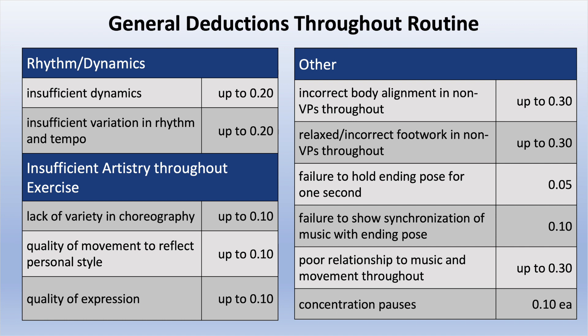General deductions throughout the routine: in the rhythm/dynamic category — insufficient dynamics up to 2 tenths, and insufficient variation in rhythm and tempo up to 2 tenths. In the artistry category — lack of variety in choreography up to 1 tenth, quality of movement to reflect personal style up to 1 tenth, and quality of expression up to 1 tenth. Other categories include incorrect body alignment in non-value parts throughout up to 3 tenths; relaxed or incorrect footwork in non-value parts throughout up to 3 tenths; failure to hold the ending pose for one second — 0.05; failure to show synchronization of music with the ending pose — 1 tenth; poor relationship to music and movement throughout up to 3 tenths; and concentration pauses — 1 tenth each.